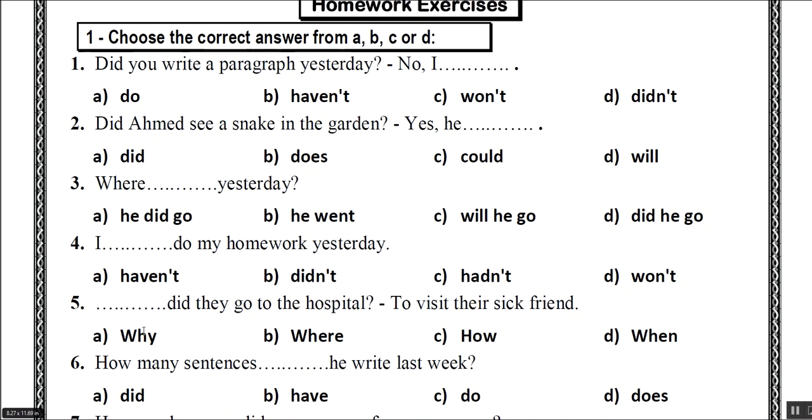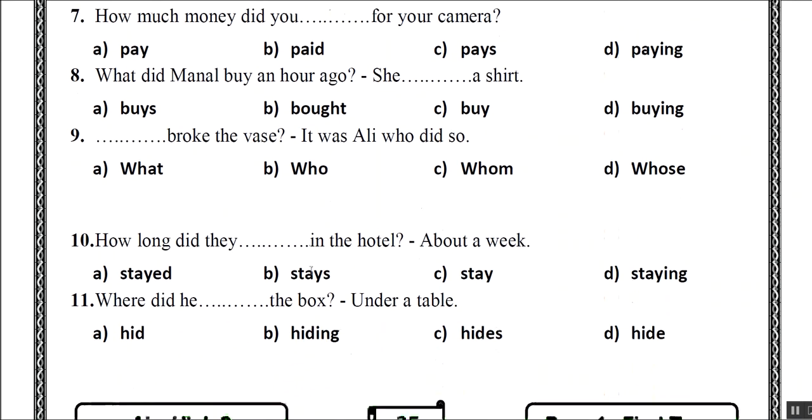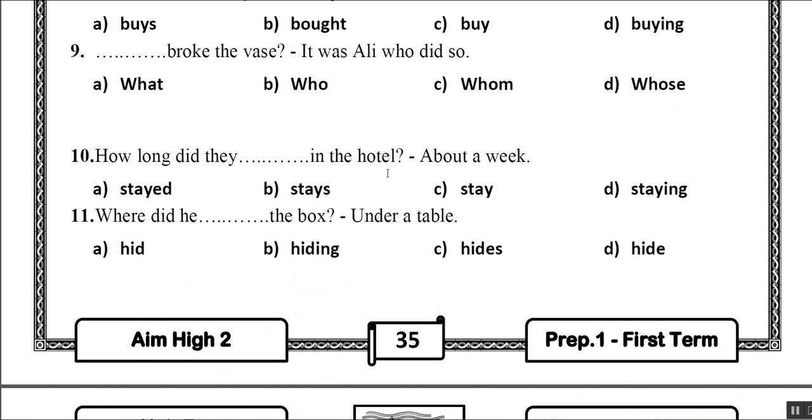How many sentences did he write last week? How much money did you pay for your camera? What did Manel buy an hour ago? She bought a shirt. Who broke the vase? It was Ali who did so. How long did they stay in the hotel? About a week.